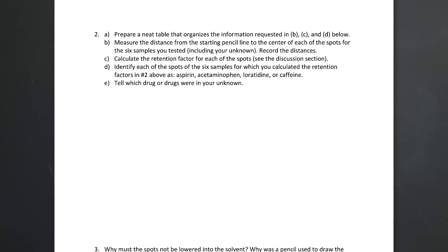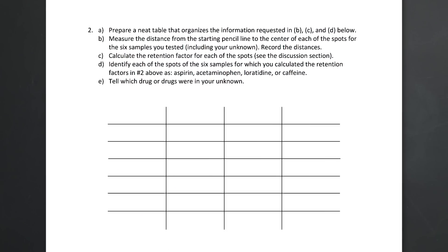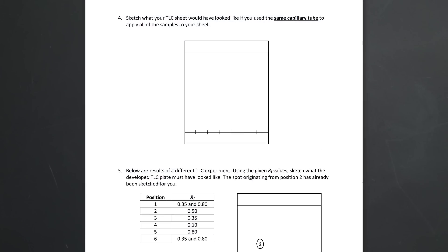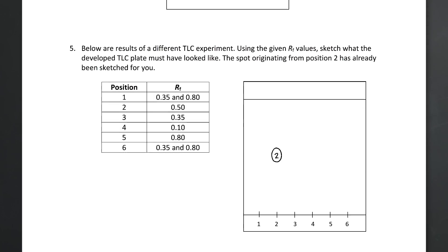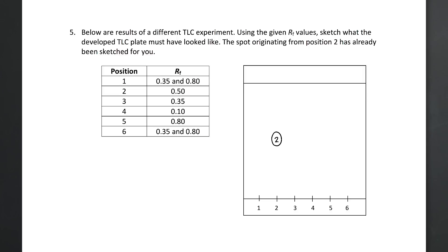On the data page, make a neat table with rows and columns that organizes your data. Include the starting position, the distance to the spots, the RF, and the identity of each spot in your unknown and known samples. You're also asked about what your sheet would look like if you mistakenly used the same capillary tube for all of your samples, and you're asked to draw what a developed TLC sheet would look like with data from a different TLC experiment.